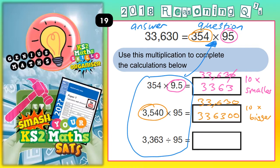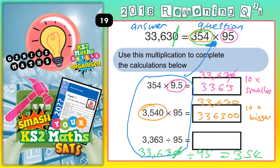In the last one, we're basically making the 33,630 10 times smaller and dividing that by 95. So going back to the original question: 33,630 divided by 95 gives an answer of 354. But you are making the 33,630 10 times smaller because you've lost that 0, which means there's going to be 10 times fewer 95s in there. So 10 times less than 354 is 35.4.